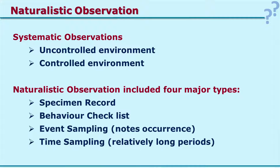In naturalistic settings where you are not controlling, observation generally includes four categories: specimen record, behavior checklist, event sampling, and time sampling. Event sampling means noting the occurrence of a particular behavior—how many times it is happening. Time sampling means observing a child for one whole week or intermittently once or twice a week for the whole month. The researcher must plan in advance when to observe in a naturalistic environment.